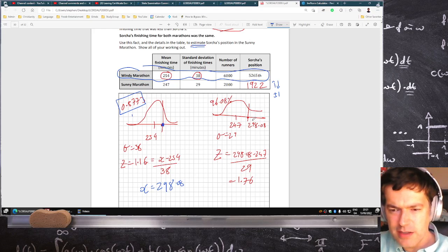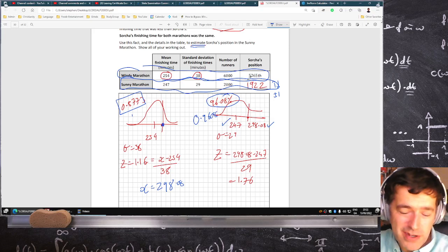And likewise here, for the second one, you know her time now, 298, and you know the average for the second one. So you can do a Z score, you get 1.76, and that corresponds to an area of 96.08%. Because in the formula book, it was 9.608. So you just get that percentage of 2000, and that's 192.16, and I rounded up.